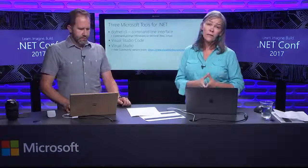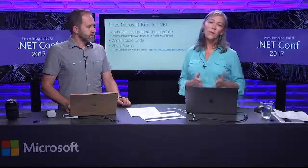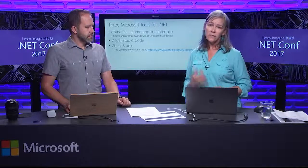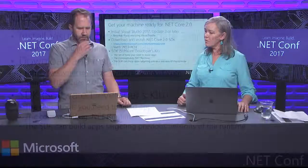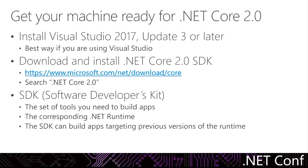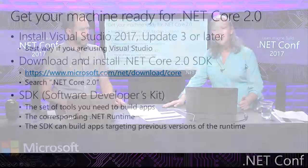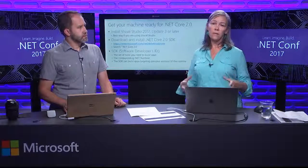I want to stress again, they're all free. There are some rules about using Community edition that most of you will not encounter, but you can check those out at the website. I also want to clarify getting .NET Core 2. If you're running Visual Studio 2017 Community Edition and you update to 15.3, it will just happen — that's the best way to get .NET Core 2.0. Otherwise, you'll go and get the SDK, which is a bucket that has all the tools except the editor that you need for development.